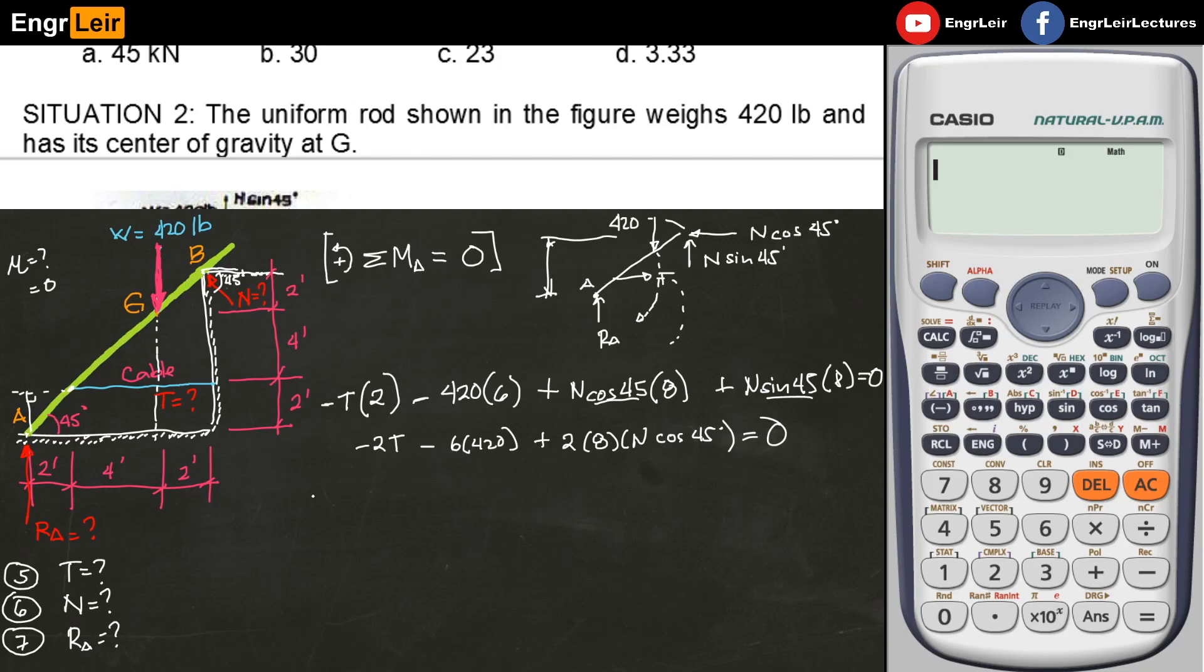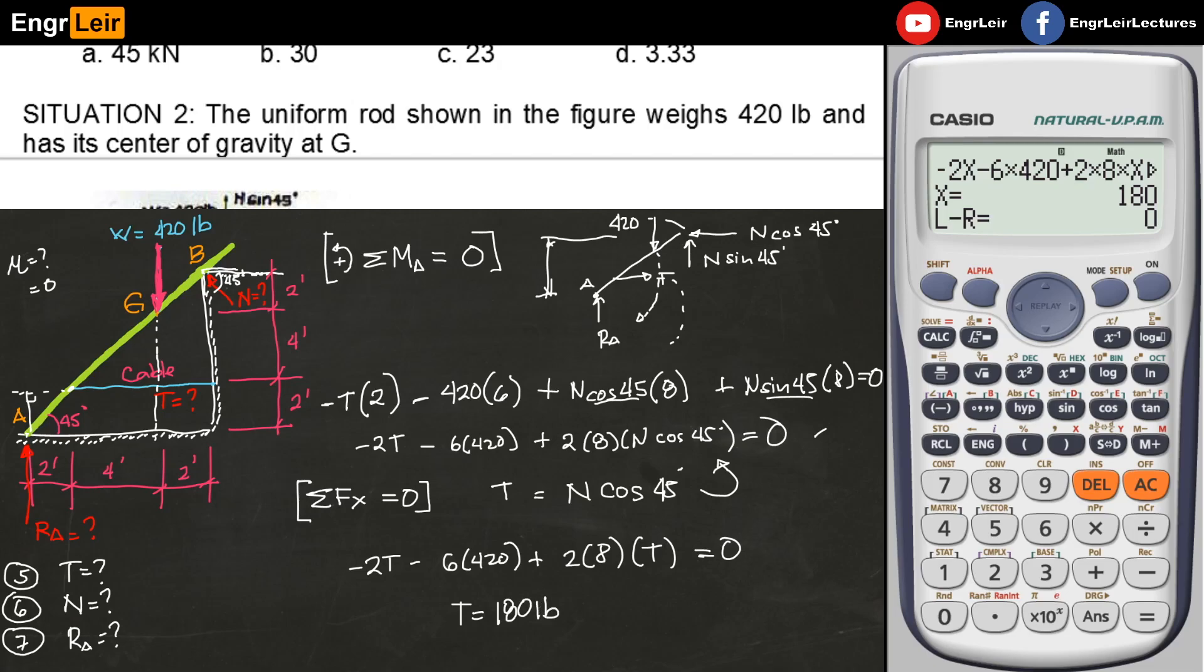Now, if I sum up the forces horizontal and equate it to zero - what has horizontal component? Only the tension must equal the horizontal component of the normal force at the top. So this must equal N cosine 45 degrees. This is the equation I get. From summation of moments, I substitute this. I will get only one unknown, T. You can use algebra or calculator. Solving for T gives us T equals 180 pounds. For question number 5, the answer is 180 pounds.